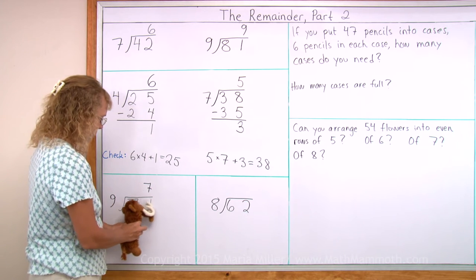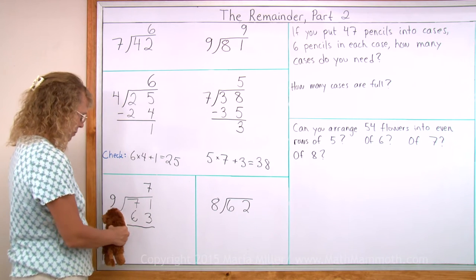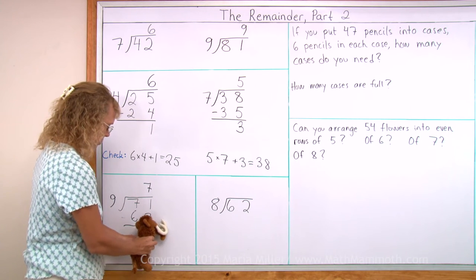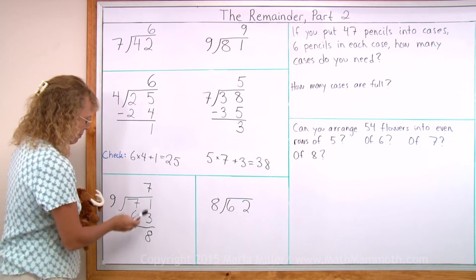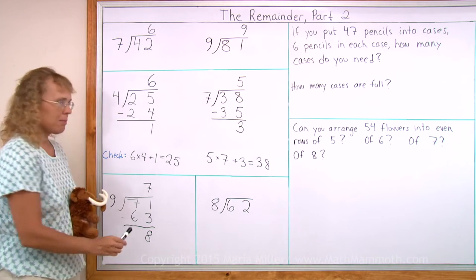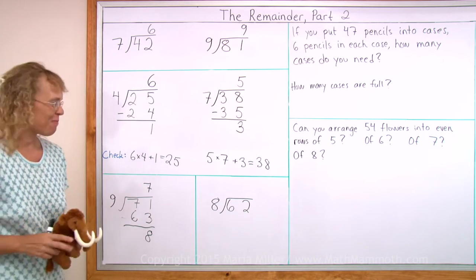7 times 9. What do you think? Did he get it right? Let's check. 7 times 9 is 63, plus 8? 71. Yes, it checks.